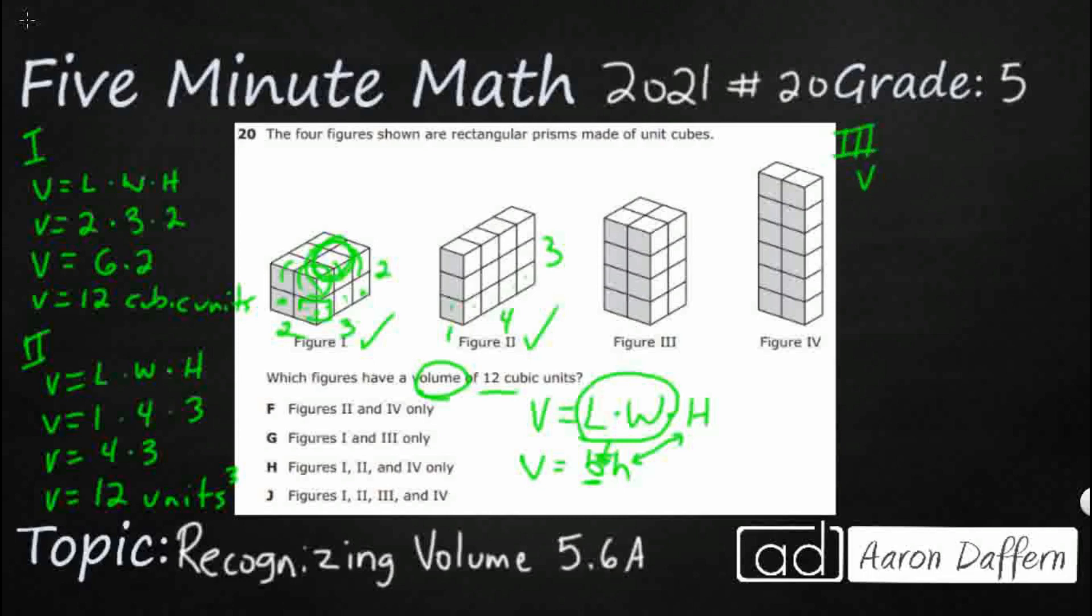Let's check figure three. So volume equals length times width times height. Let's see what we have here. Length is going to be 2. Width is going to be 2. I've got 2 by 2, that means my base right here is going to be 4.